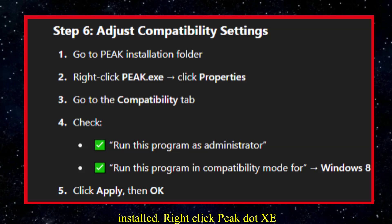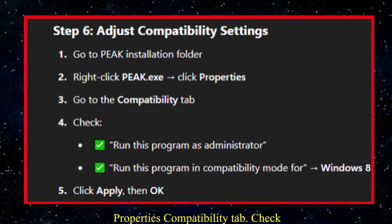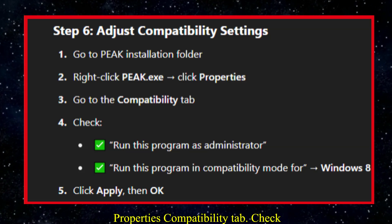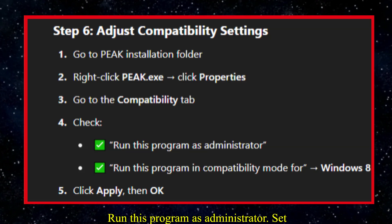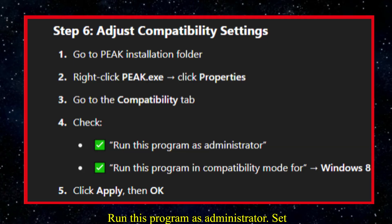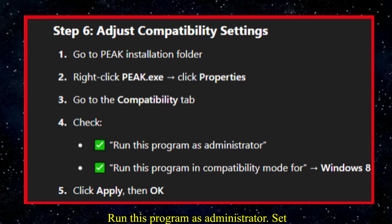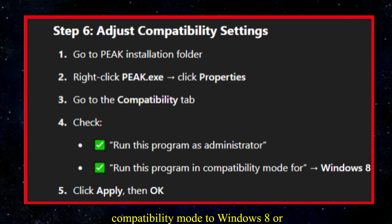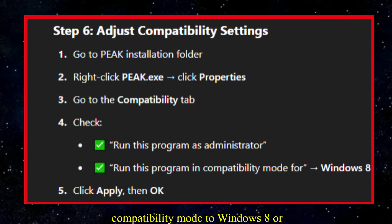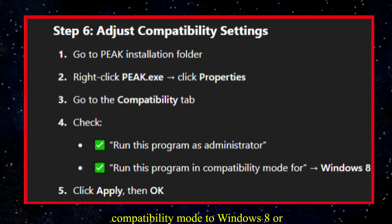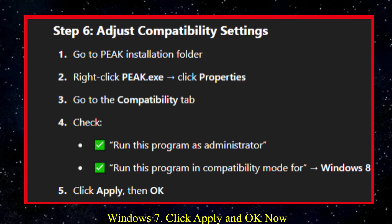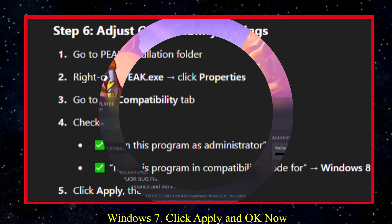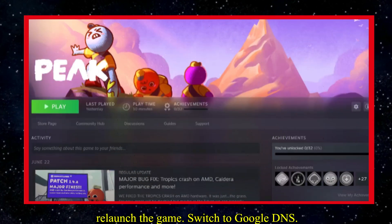Go to where Peak is installed, right-click Peak.exe, and open Properties. Under the Compatibility tab, check 'Run this program as administrator' and set compatibility mode to Windows 8 or Windows 7. Click Apply and OK, then relaunch the game.